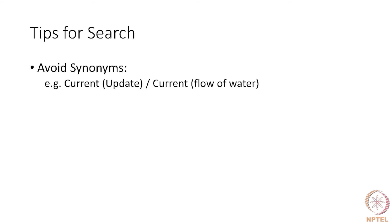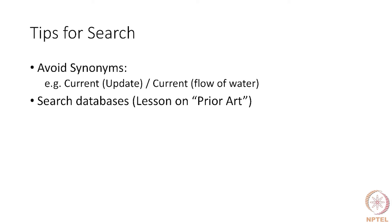There are some tips for search, and you would find enough material in the public domain on how a search has to be done. You would avoid ambiguous synonyms — for instance, 'current' can also mean present, up to date, or a flow of water. So you would use Boolean operators to avoid certain words which you don't want to appear in the search. You would search databases depending on the scope of your search, which is something we have covered in the lesson on prior art.